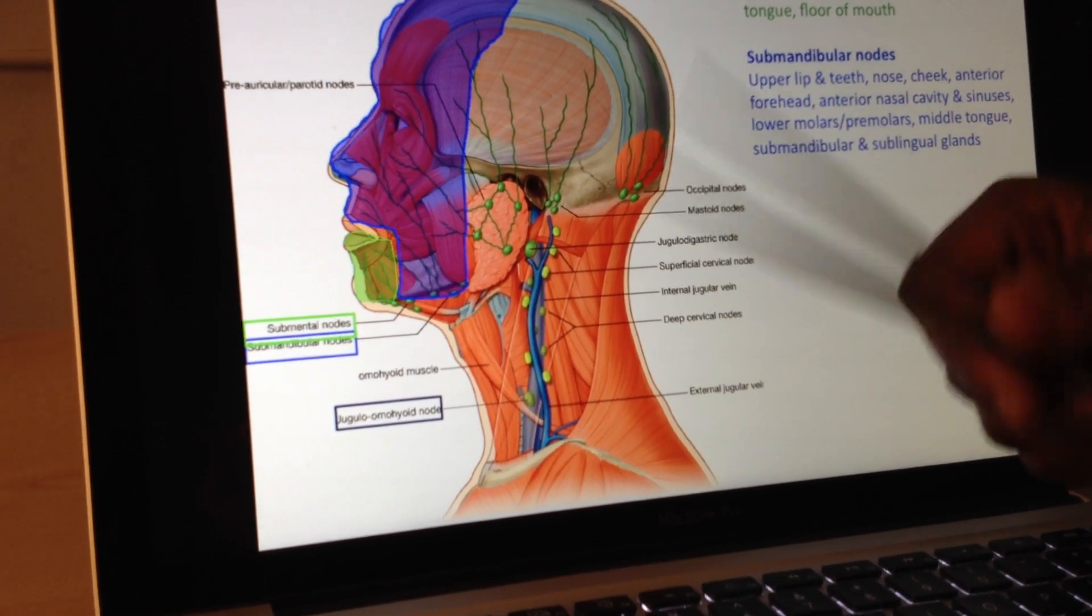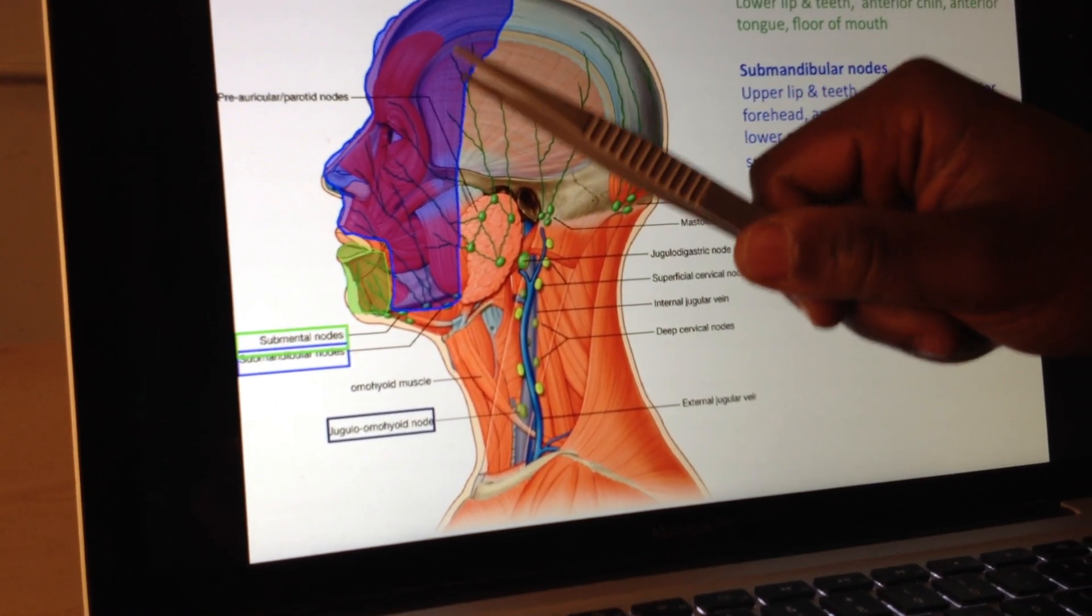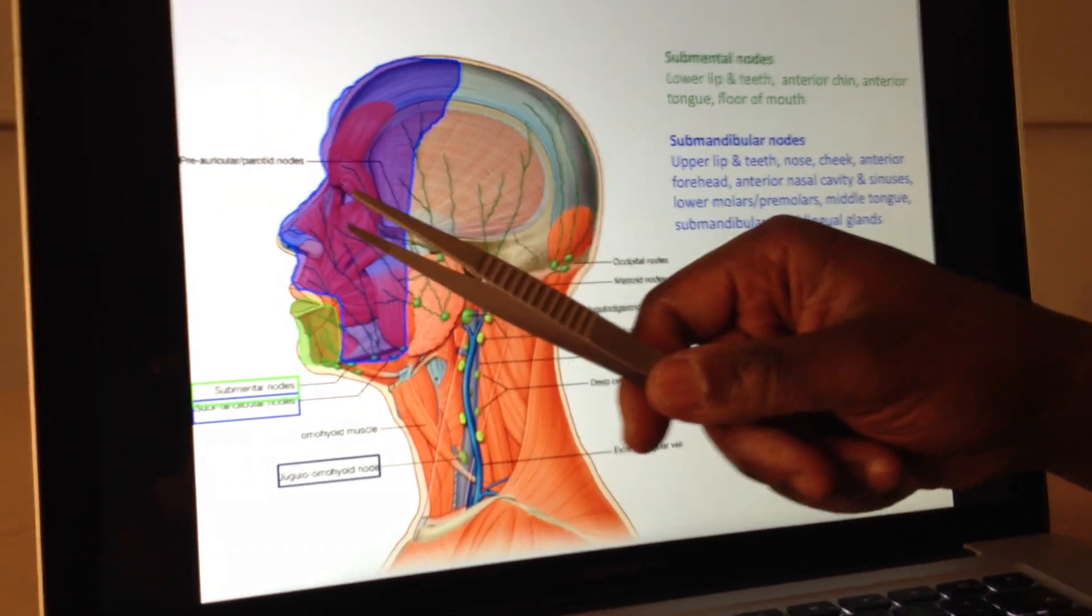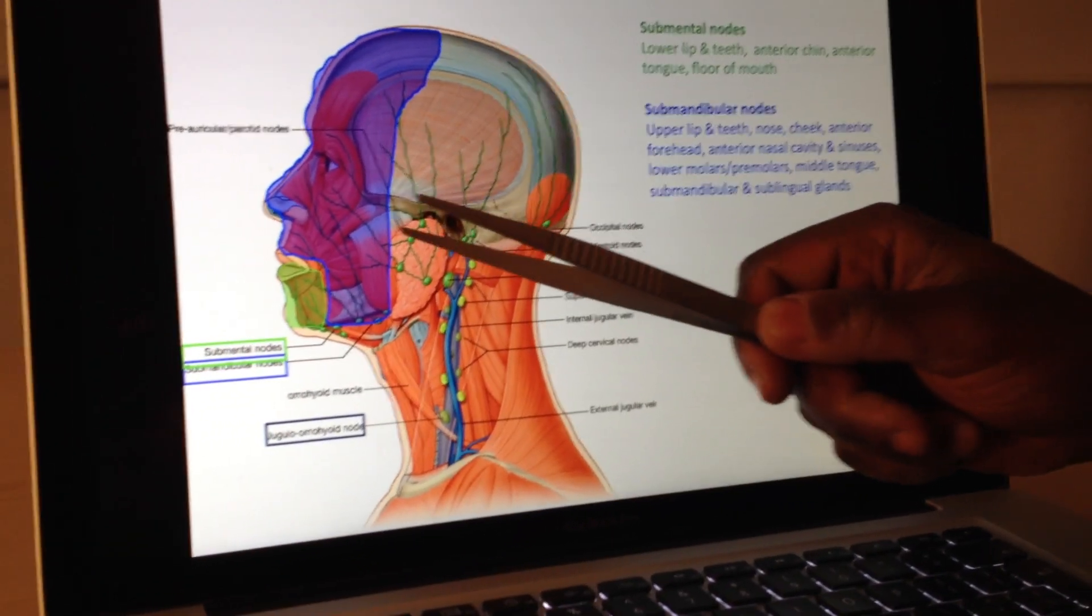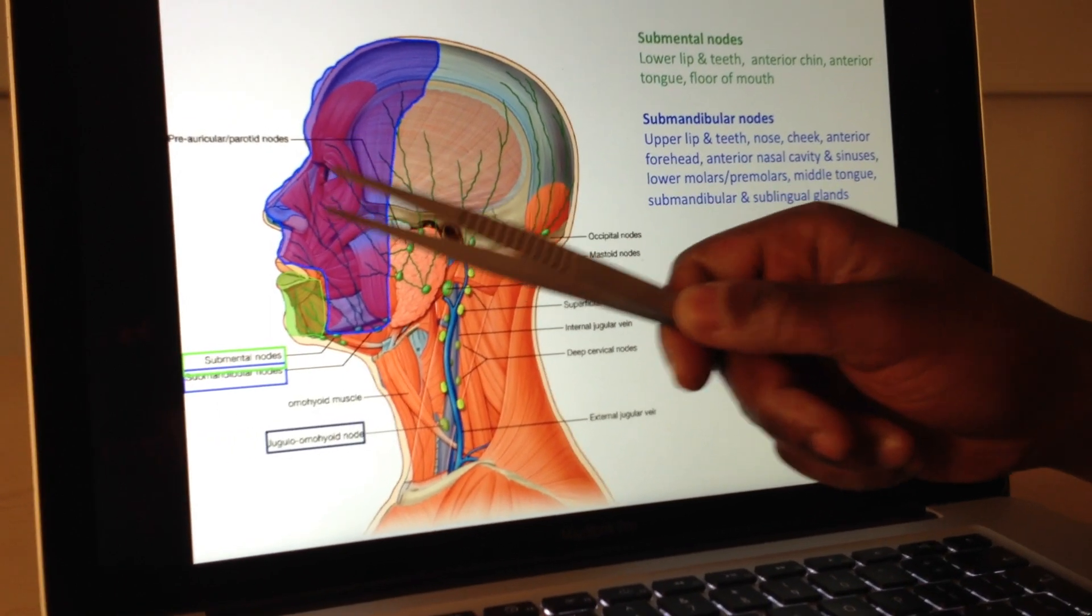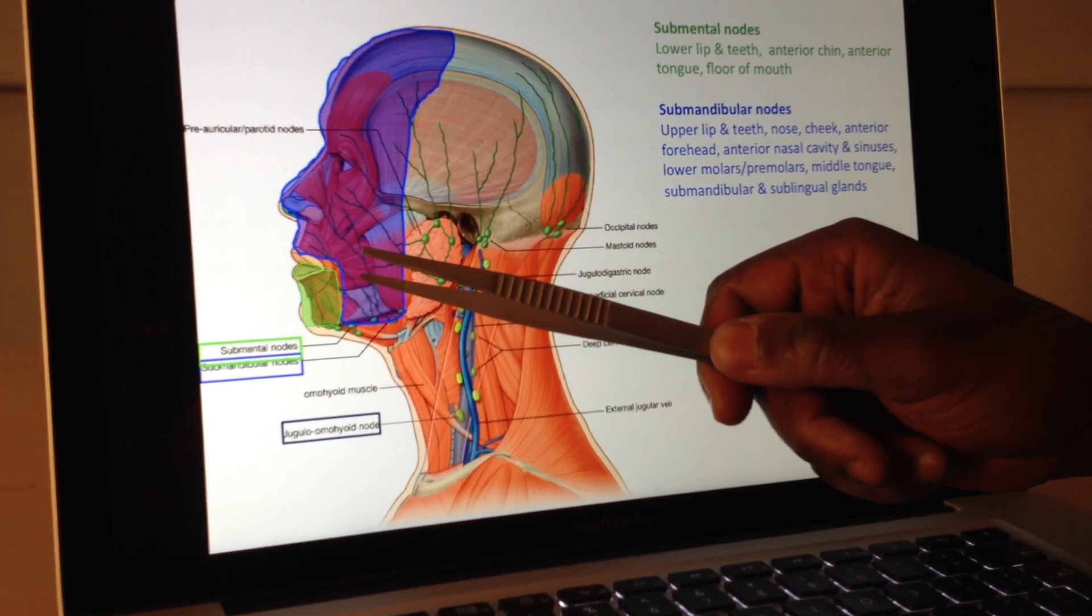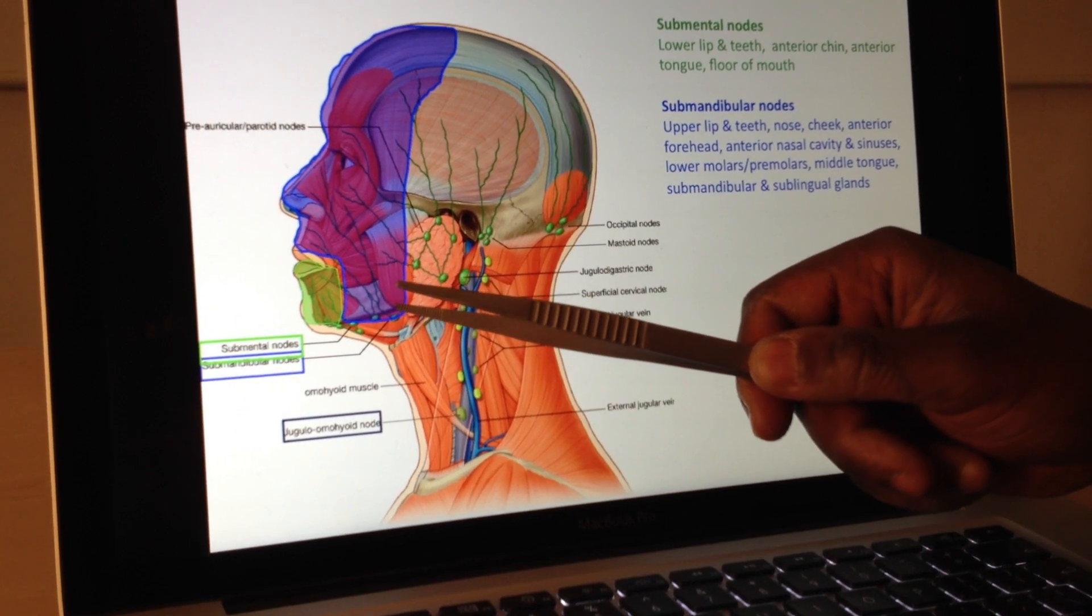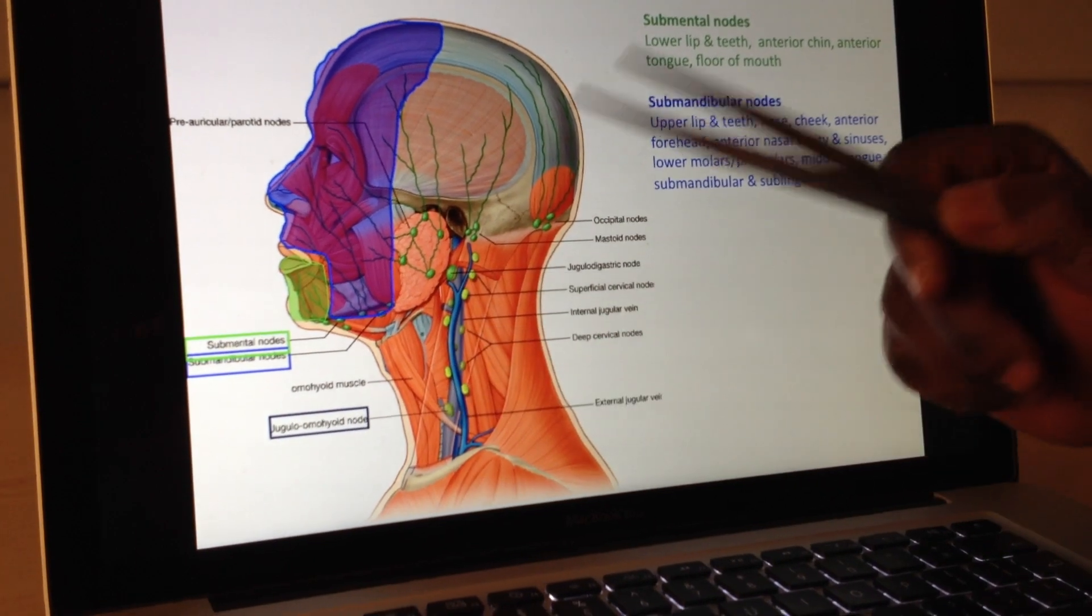If I move on to my next ones, we're talking about my submandibular nodes, which are around here. And look at the wide area that they're going to drain. We're talking about the upper teeth, the nose, the cheek, the anterior forehead, the anterior nasal cavity, and the sinuses associated, paranasal sinuses. The lower molars, the premolars, the middle of the tongue, so the middle section of the tongue now, the submandibular and sublingual glands. So it's quite a large area for those submandibular nodes.